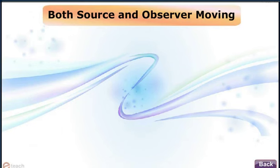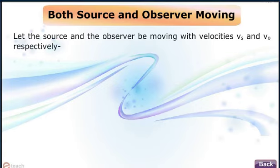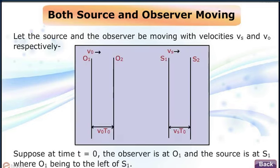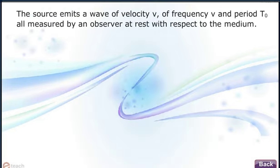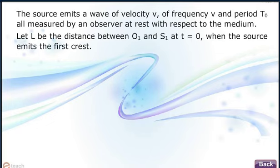Both source and observer moving: Let the source and the observer be moving with velocities Vs and V0 respectively. Suppose at time t equals 0, the observer is at O1 and the source is at S1, with O1 being to the left of S1. The source emits a wave of velocity v, of frequency ν and period T0, all measured by an observer at rest with respect to the medium. Let L be the distance between O1 and S1 at t equals 0, when the source emits the first crest.